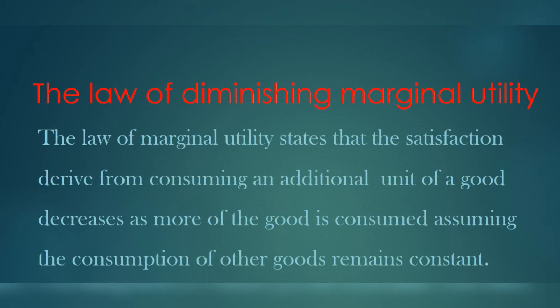The law of diminishing marginal utility states that the satisfaction derived from consuming an additional unit of a good decreases as more of the good is consumed, assuming that the consumption of other goods remains constant.